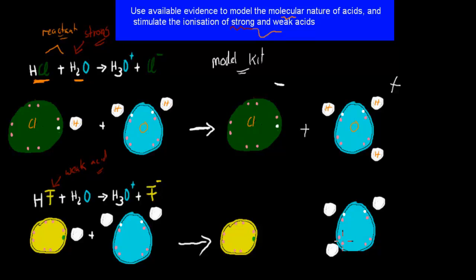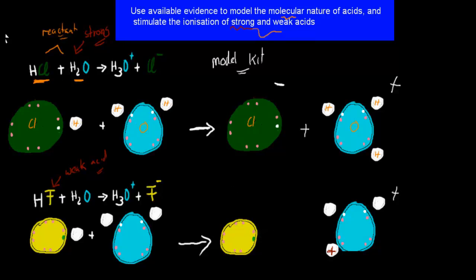We didn't gain an electron — we only gained a proton. This is a plus; this is a proton. So we have one more proton than electron, which is why overall this is positively charged. Here we lost the proton — this proton here — but we didn't lose the electron. The electron is still there, which is why overall it has a negative charge. So we have our hydronium ion and our fluoride ion.